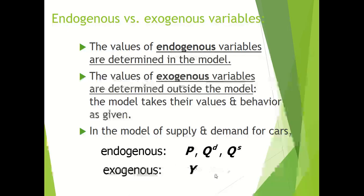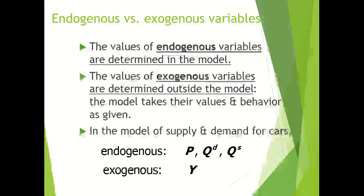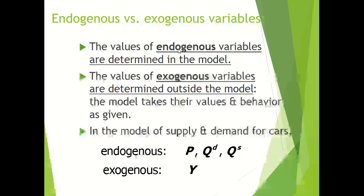Price of steel is also an exogenous variable in this model. The difference is: variables whose values can be estimated using the model are endogenous variables, and variables whose values are already given are exogenous variables. The etymology also explains the meaning — 'endo' means inside and 'exo' means outside. So endogenous variables are determined inside the model and exogenous variables are determined outside the model.